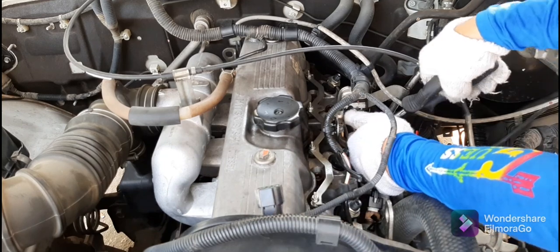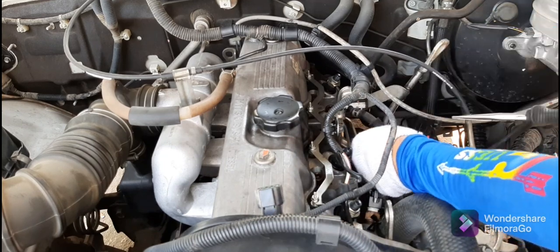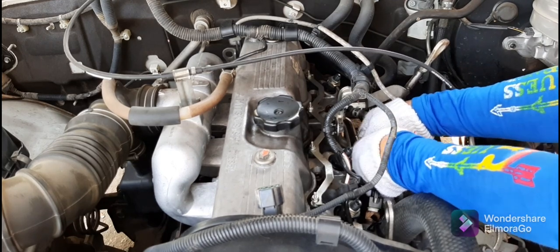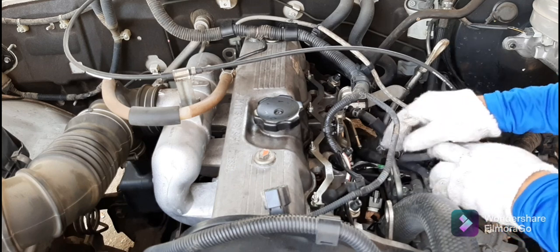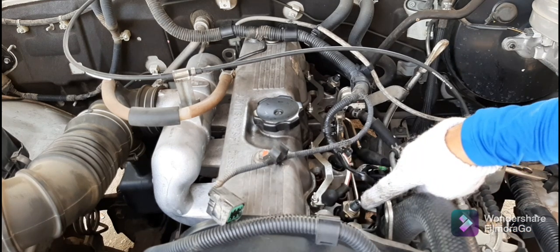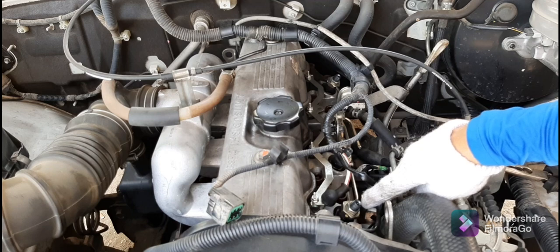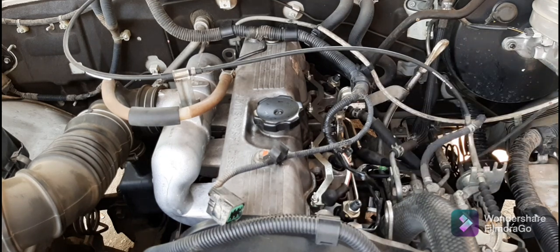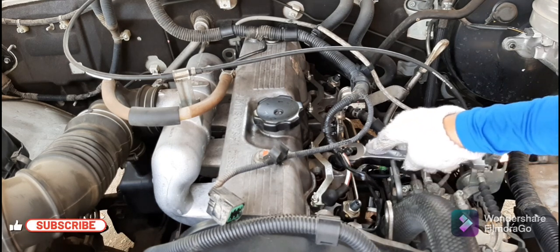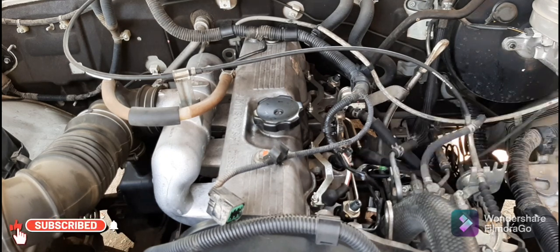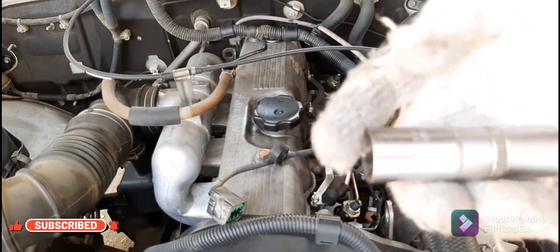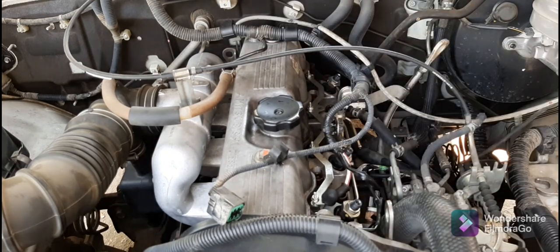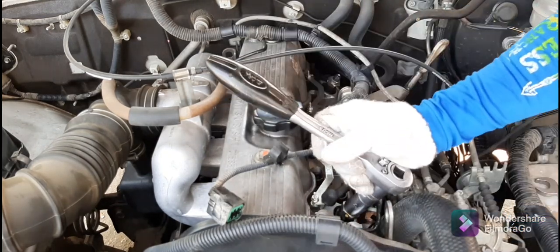Then the return hose of our injectors going to injection pump, we have to remove also. Then the nut of our injector nozzle, four pieces. So this is 17mm, we will use socket wrench, 17mm, then ratchet handle.